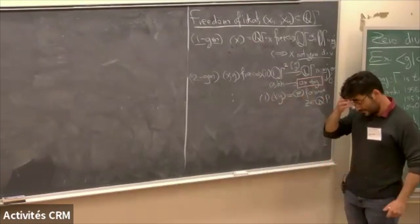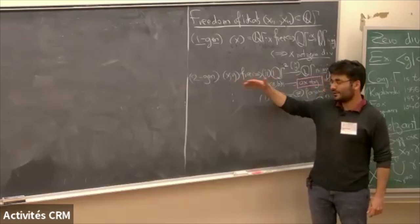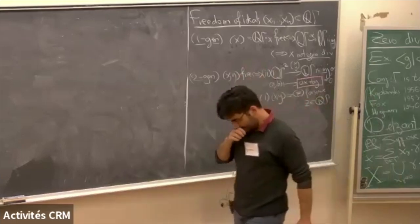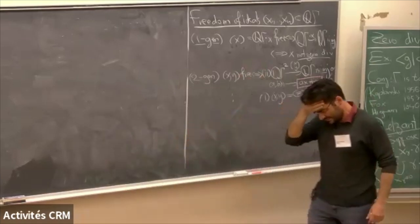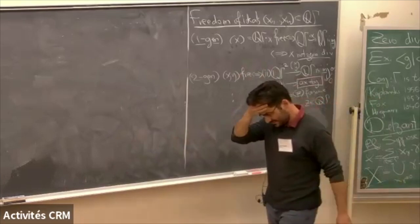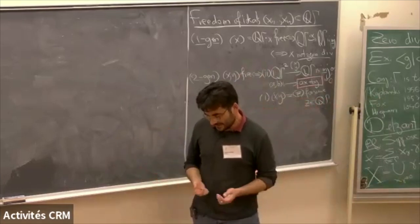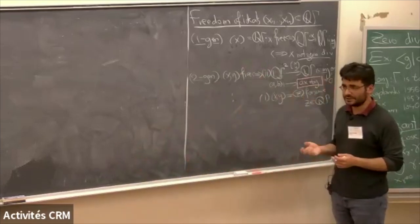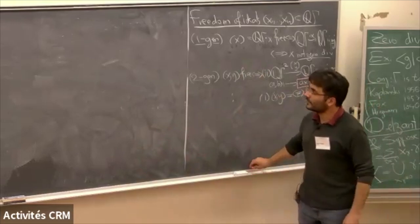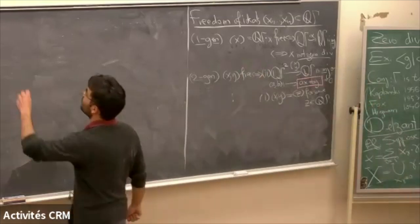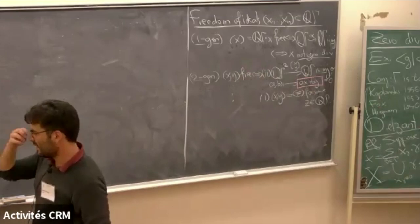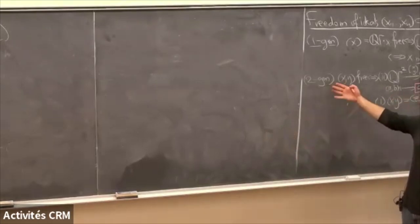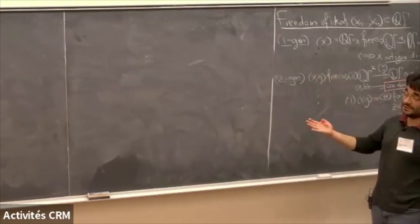For the free group, after two generators you can do three generators and as many as you want. For other groups, this fails at some point. Free groups are the only groups for which every ideal generated by any number of elements is free — that essentially follows from a theorem. There's a special ideal called the augmentation ideal, and if that's free, then your group has free subgroups. There is a version of this theorem for ideals generated by more elements, which needs more in the way of injectivity radius, and this is recent work with Del Dunn.